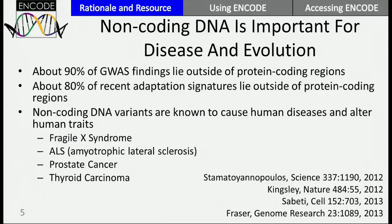If one is more single-gene-based, one can look at anecdotes. For instance, Fragile X, a severe Mendelian disorder, is caused by non-coding mutations in the genome. ALS has a recent identification of non-coding mutations that are important for it — initially tagged as protein-coding variants, later found incorrect. There are also variants linked to thyroid cancer, prostate cancer, and others.